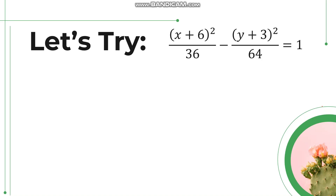Now, let's try to identify the parts of the hyperbola given its equation. So first, let's have (x plus 6) squared over 36 minus (y plus 3) squared over 64 equals 1. The first thing we have to do is identify the orientation of our hyperbola. By looking at the equation, x comes first and is positive, so we know that it is a hyperbola with a horizontal transverse axis.